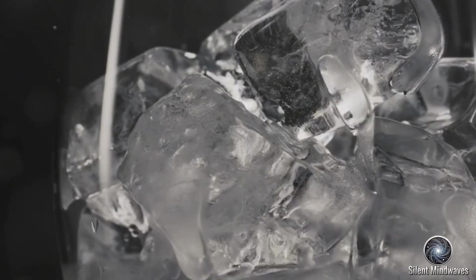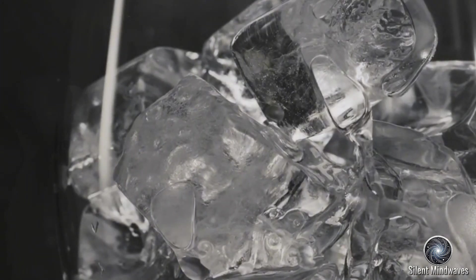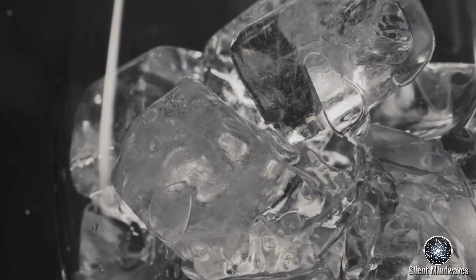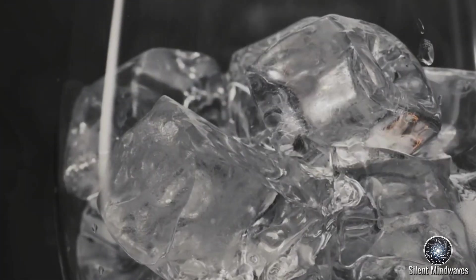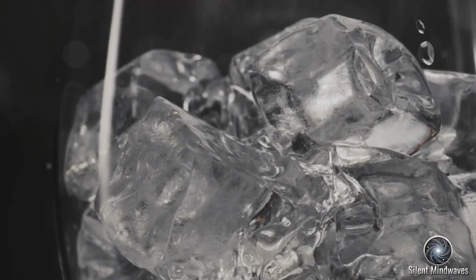Melting ice. An ice cube, with its water molecules locked in a rigid crystalline structure, represents a state of low entropy. This ordered arrangement of molecules is stable and structured.